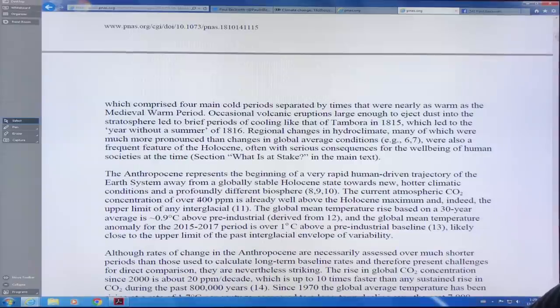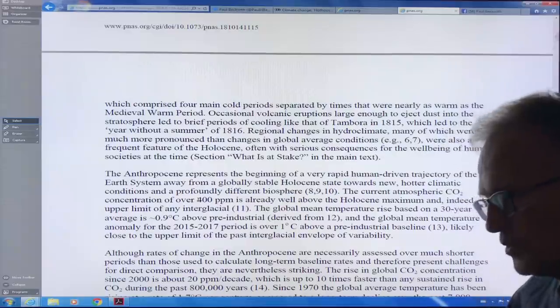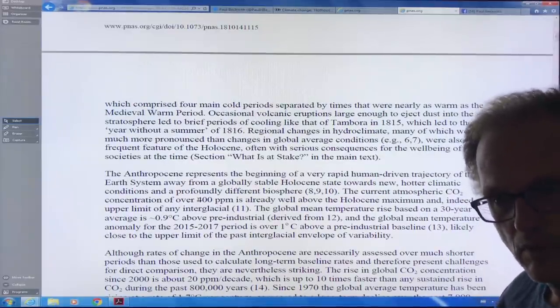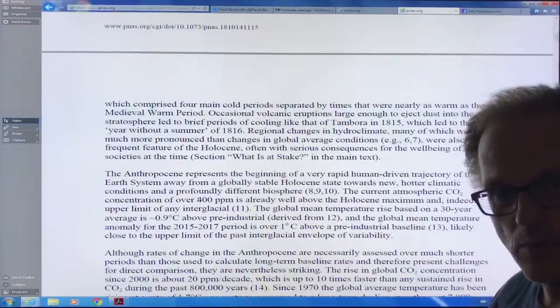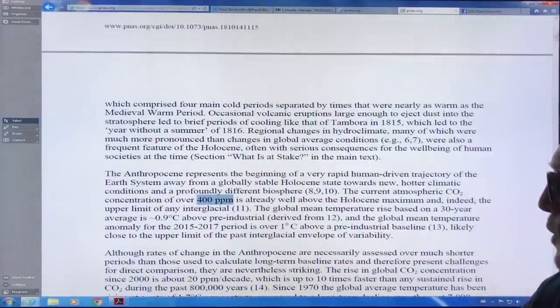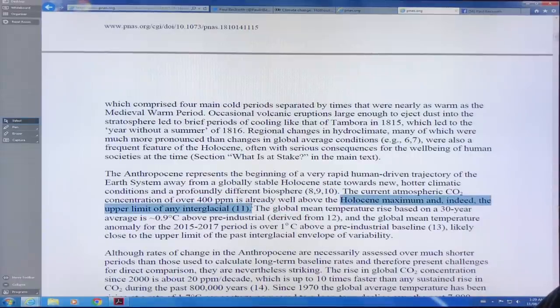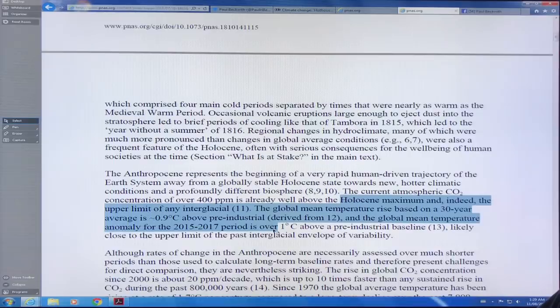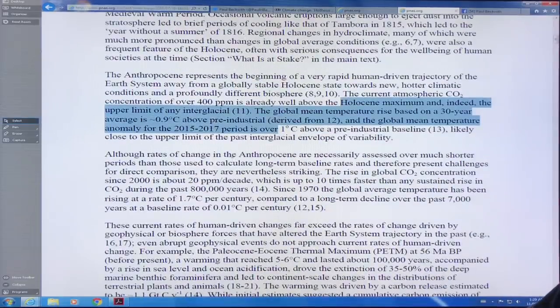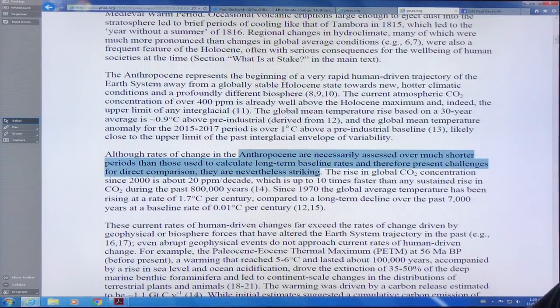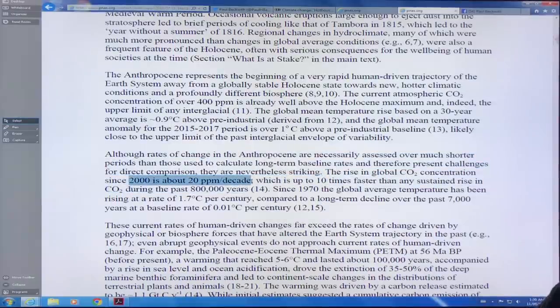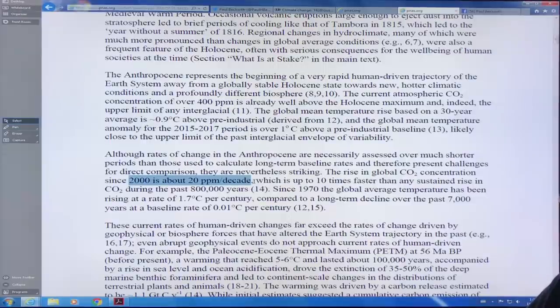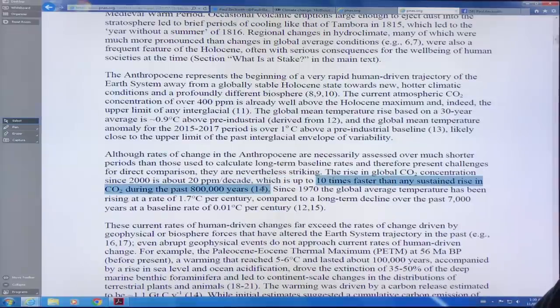In the last 1.2 million years, the CO2 level has varied between about 180 and 280 parts per million. And we're now at 400 parts per million, well above the Holocene maximum and the upper limit of any interglacial. How much are we changing? The rates of change in the Anthropocene are enormous compared to what we've had before. The rise in global CO2 concentration since 2000 is about 20 ppm per decade. That's about 2 ppm per year. That's up to 10 times faster than any sustained rise of CO2 in the last 800,000 years.